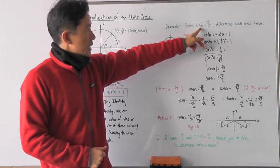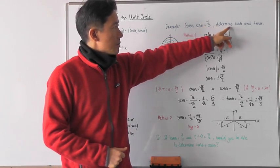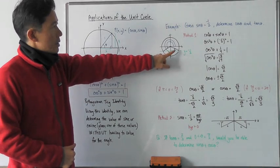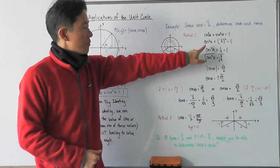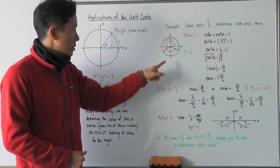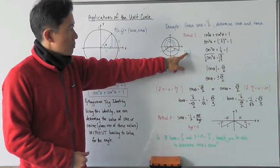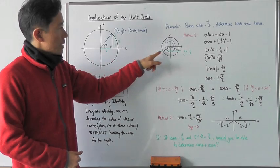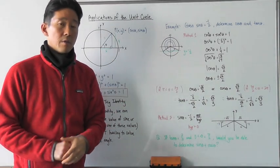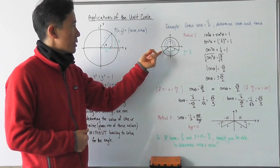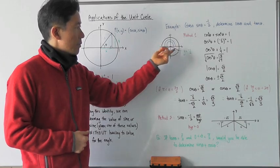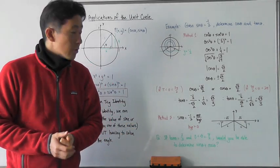Given sine theta is equal to negative one half, determine what cosine theta and tangent theta are. If we know that sine theta equals negative one half, we know that sine theta is associated with the y value on the unit circle. If I draw my unit circle with y equal to negative one half, they're going to intersect in two locations — one in the third quadrant and one in the fourth quadrant — which means I'll come up with two different values for cosine theta.